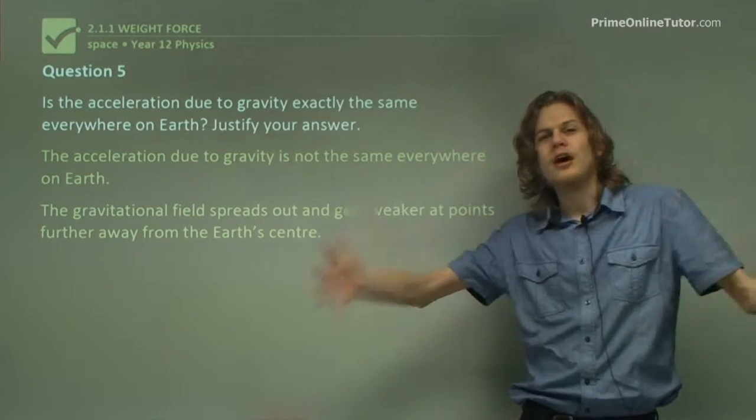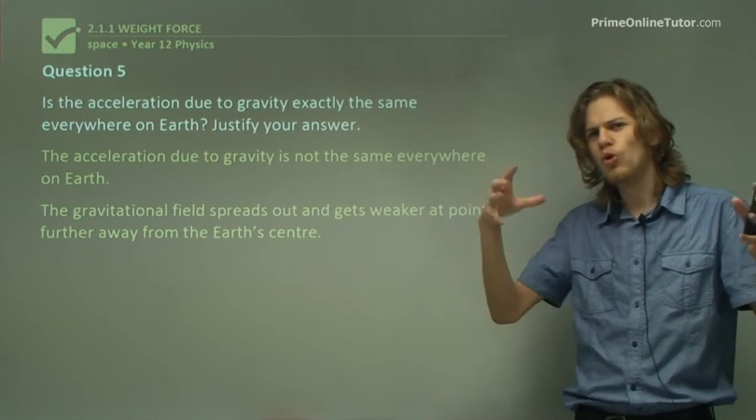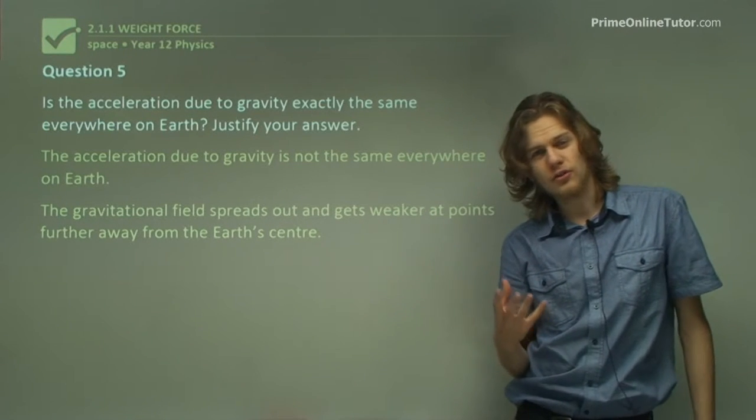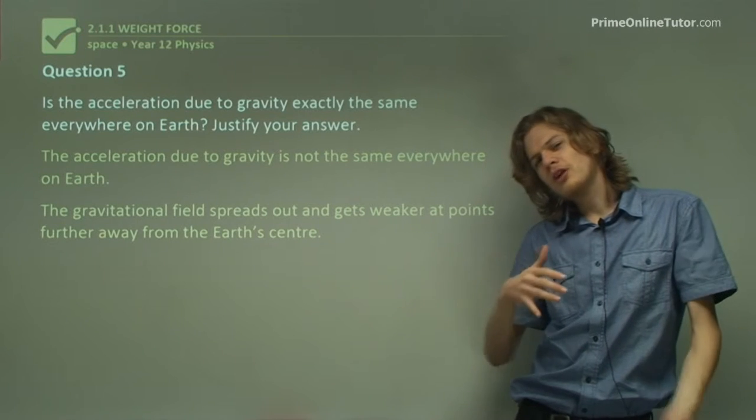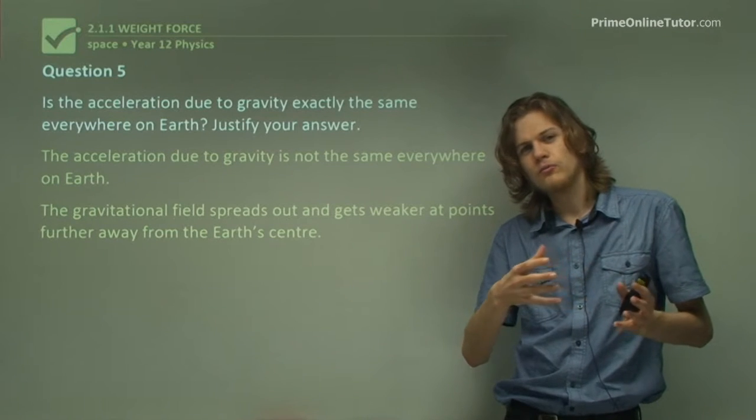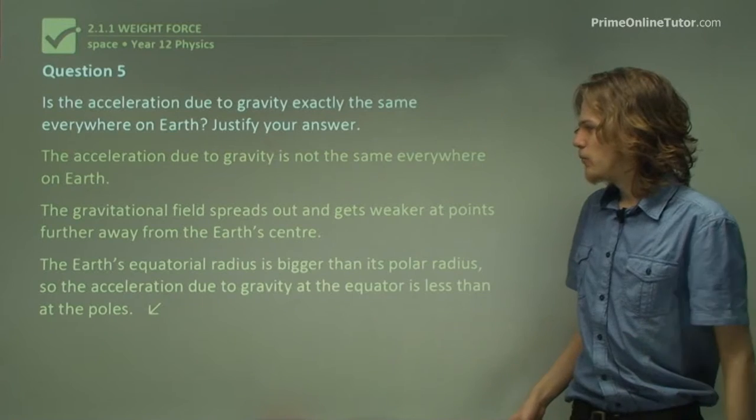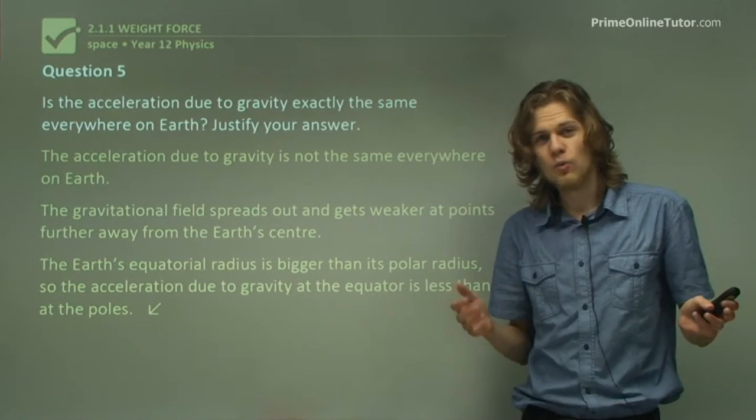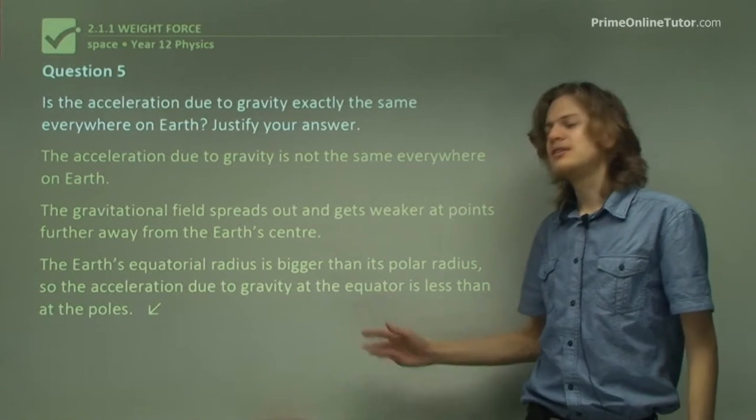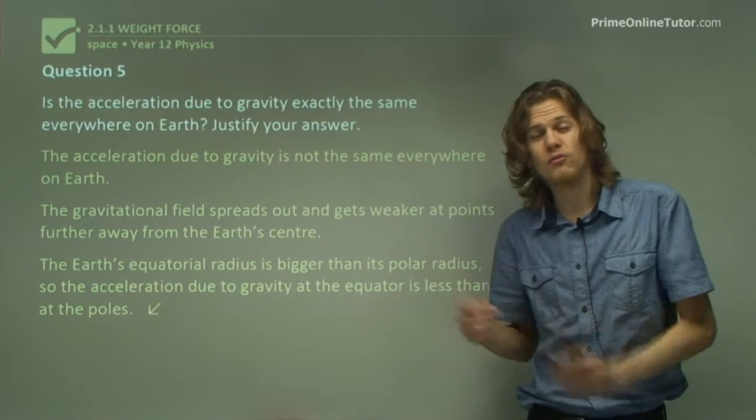Well, as we know, the gravitational field spreads out as we get further away from the center of the Earth. Right? That's what the ball with the lines coming into it was. So it gets weaker at points that are further away from the Earth's center. So what happens if we climb a very, very tall mountain? Or what happens if we're at the equator, which bulges slightly compared to a sphere? Well, it means that if we're at the Earth's equator, which is further away from its center than its poles, only by a little bit, it means that we'll get less acceleration due to gravity, because we'll be further away and in a weaker part of the Earth's gravitational field.